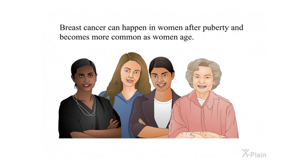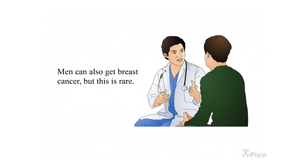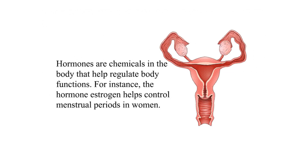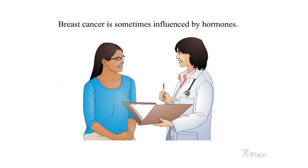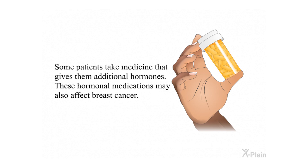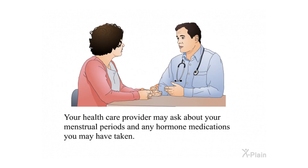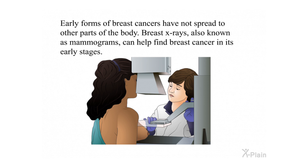Breast cancer. Breast cancer can happen in women after puberty and becomes more common as women age. Men can also get breast cancer, but this is rare. Hormones are chemicals in the body that help regulate body functions. For instance, the hormone estrogen helps control menstrual periods in women. Breast cancer is sometimes influenced by hormones. Some patients take medicine that gives them additional hormones, and these hormonal medications may also affect breast cancer. Early forms of breast cancers have not spread to other parts of the body. Breast X-rays, also known as mammograms, can help find breast cancer in its early stages.